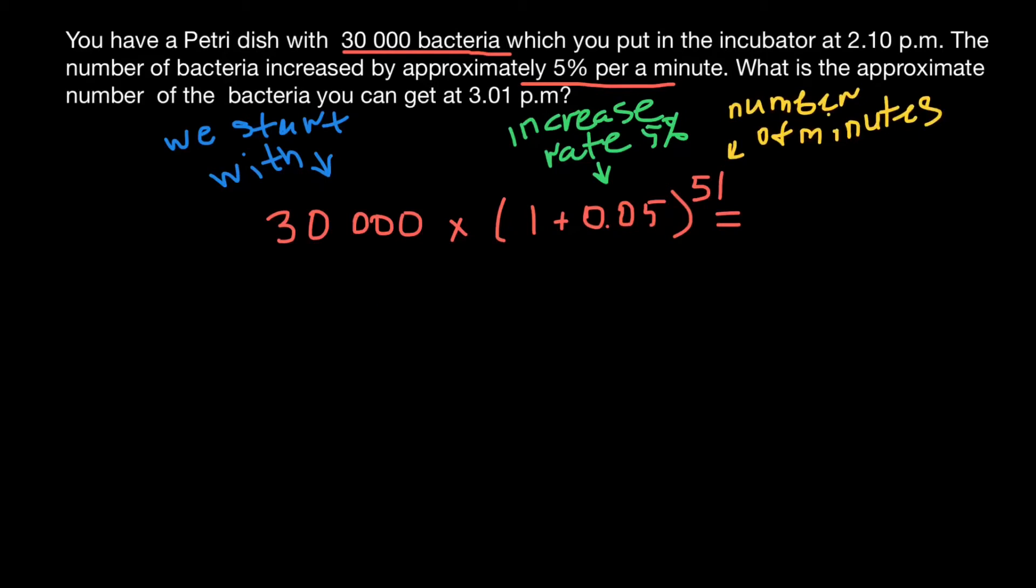This is going to be an approximation. So the answer is going to be 361,223. This is the expected number of bacteria. And again, this is not an exact number, this is just an approximation.